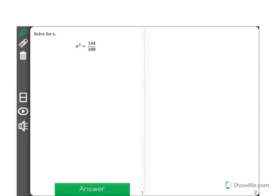Solve for x. x squared equals 144 over 169.